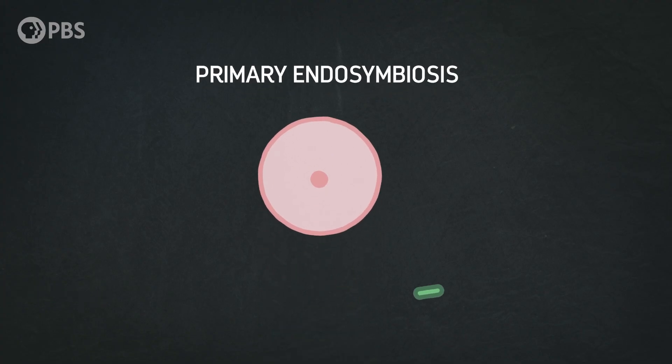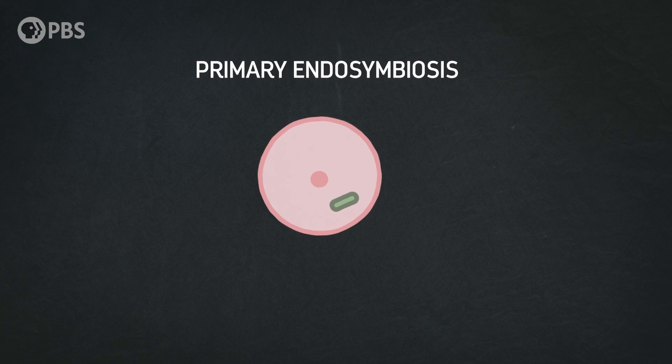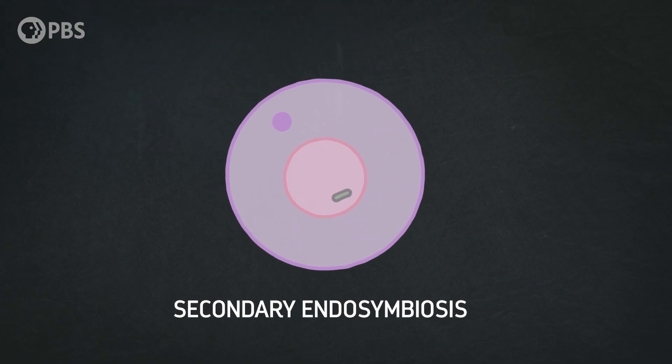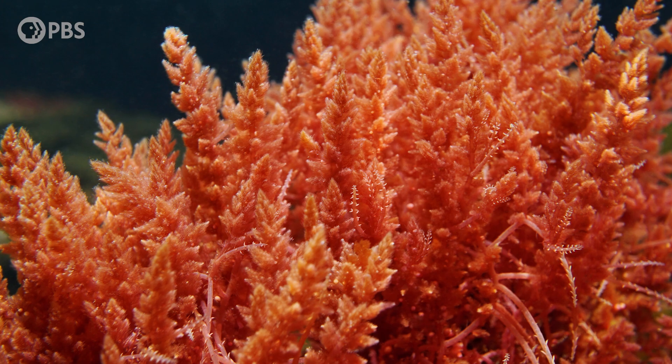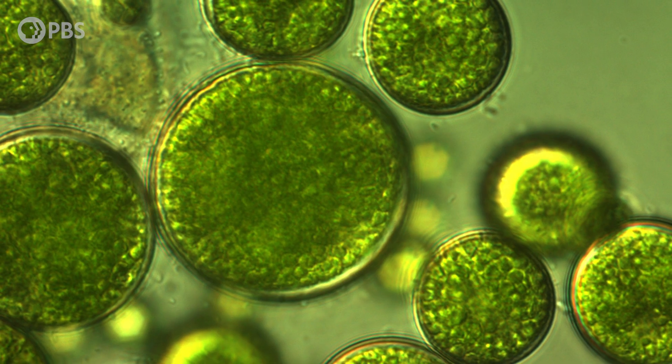Now, primary endosymbiosis is when a complex cell called a eukaryote engulfs a simpler cell called a prokaryote, and just keeps it instead of destroying it. It's how our ancient ancestors gained their mitochondria, and how plants gained their chloroplasts. And secondary endosymbiosis is when that first eukaryote is engulfed and incorporated by a second eukaryote, and still keeps the structures from the first simple cell — it's basically a cellular turducken. In this case, over a billion years ago, a simple photosynthetic bacterium was engulfed by a eukaryote, which gained the ability to photosynthesize as a result. This was the primary endosymbiosis, and this event gave rise to many of the photosynthetic lineages we know today, including the red algae, green algae, and land plants. Then, probably a few hundred million years later, a red algae was engulfed by the common ancestor of the Apicomplexans and Chromera, allowing it to steal the photosynthetic plastid from the red algae. This was the secondary endosymbiosis.